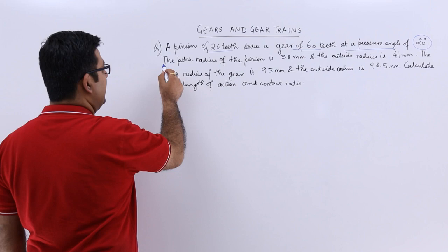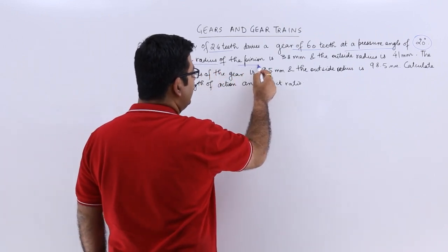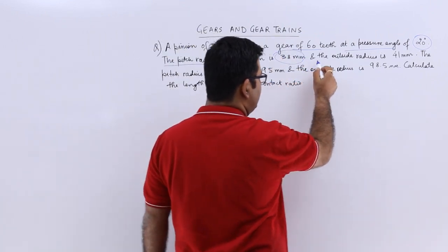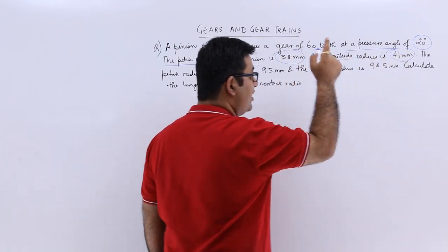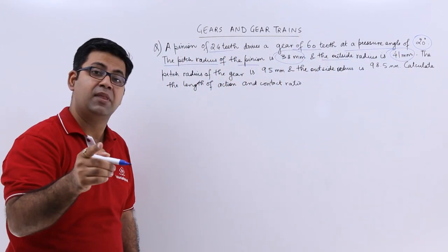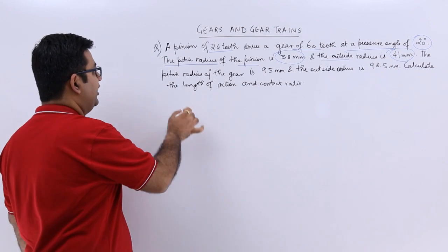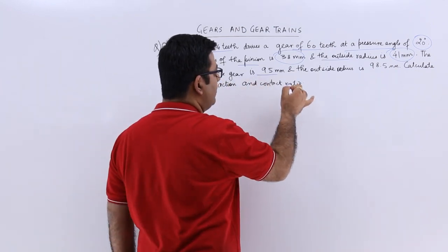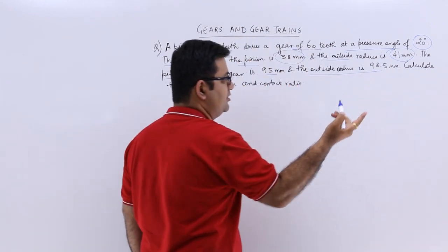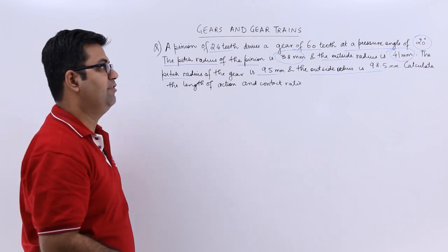The pitch radius of the pinion is 38 mm and the outside radius is 41 mm. Now this outside radius is the addendum radius. The pitch radius of the gear is 95 mm and the addendum radius is 98.5 mm.